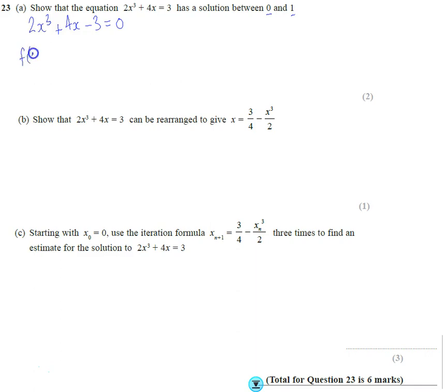So let's find f(0), that just means substitute 0 for x. So 2 lots of 0 cubed plus 4 lots of 0 minus 3. We get 0 plus 0 minus 3.